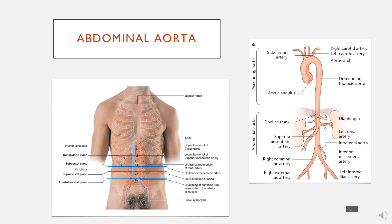So the abdominal aorta is a continuation of the aorta which comes from the thoracic — so here would be the heart, it gives off the aorta and the arch of the aorta that I talked about last week. The descending thoracic aorta carries on as the abdominal aorta beyond the diaphragm, and this just shows the surface anatomy of where it would be in an actual patient.